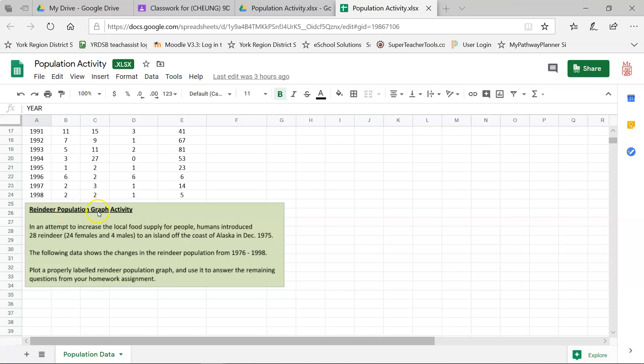So the reindeer population graph activity basically says that in an attempt to increase the local food supply for people, humans introduced 28 reindeer, 24 females and 4 males, to an island off the coast of Alaska in December of 1975. The following data shows the changes in the reindeer population from 1976 to 1998. What we're going to do is we're going to plot a properly labeled reindeer population graph and use it to answer the remaining questions on our homework assignment sheet.